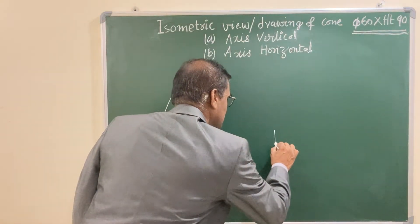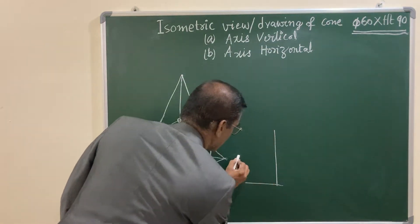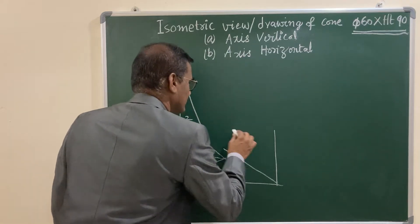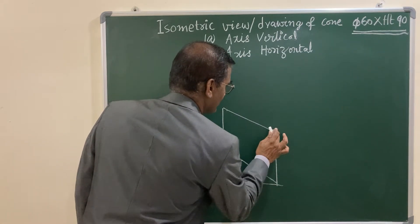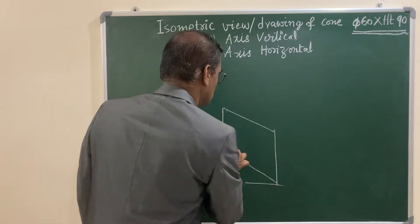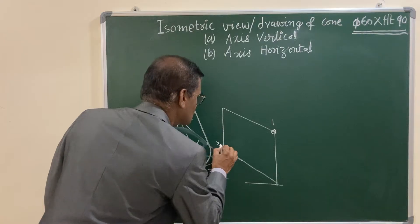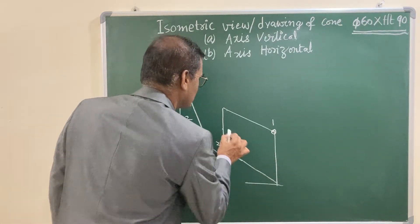For that, let us consider the vertical line, and at an angle 30 degrees, complete the parallelogram with the dimensions 60 mm. You got a shorter diagonal. This is center one and this is center two. Join center one with midpoint of opposite sides.